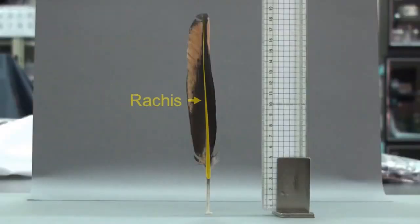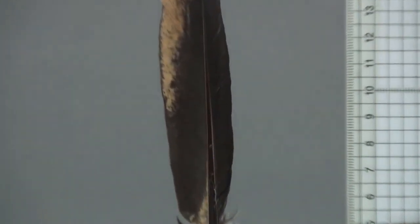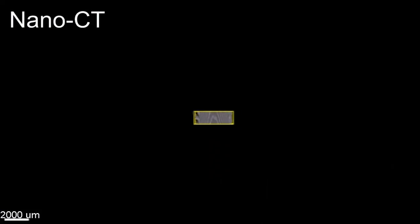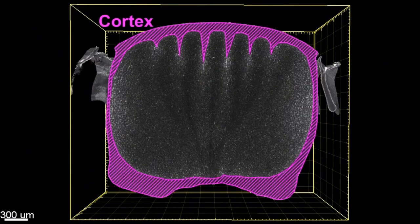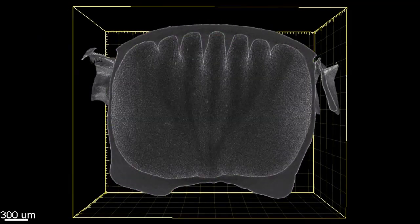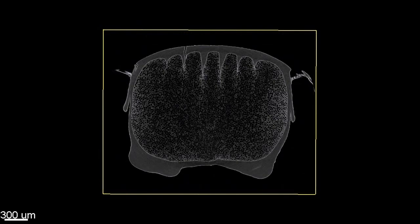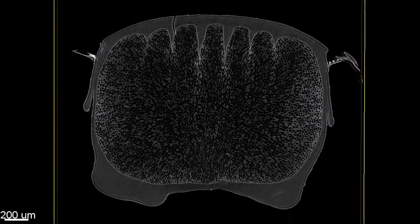When birds fly, the strong central shaft of a feather — the rachis — supports the feather to work against the mechanical loads from air. The rachis is composed of the outer rigid cortex and an inner porous medulla. Resolving the detailed integration of these two components reveals the architectural principle of the diverse feather shaft in nature.